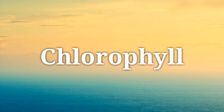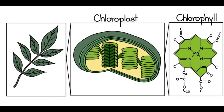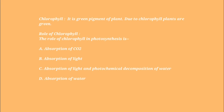Next is chlorophyll. Chlorophyll forms in the chloroplast and is the green pigment of the plant. Due to chlorophyll, plants are green. The role of chlorophyll in photosynthesis is: a) absorption of carbon dioxide, b) absorption of sunlight, c) light absorption and photochemical decomposition of water, and d) absorption of water.